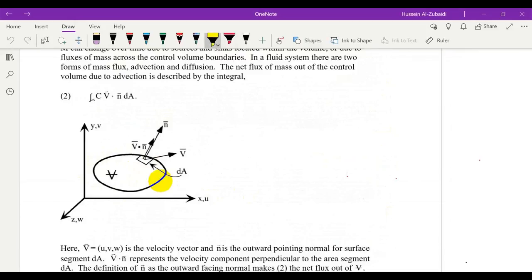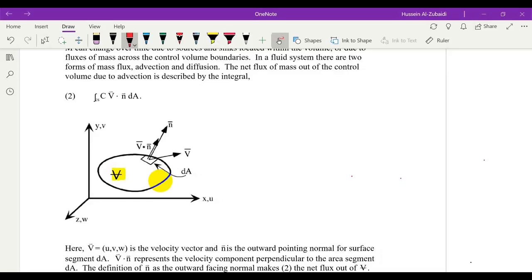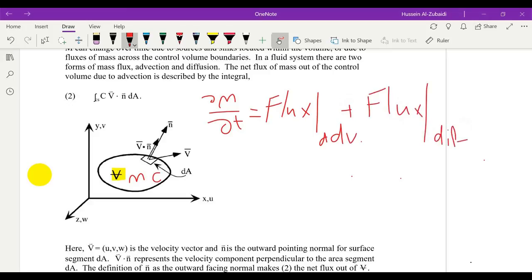The volume of this control volume is V. We also have mass within this control volume of concentration C. So the rate of change of mass within this control volume with time equals flux due to advection plus flux due to diffusion plus or minus source/sink terms.